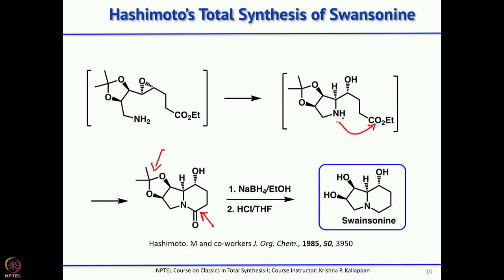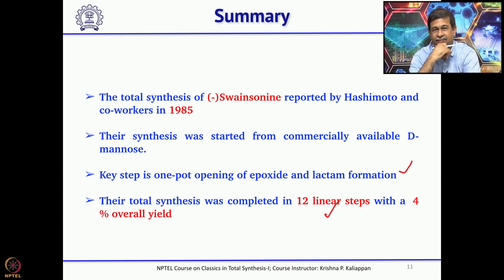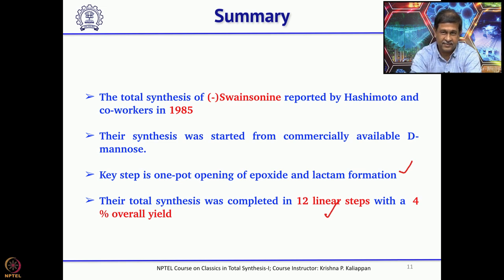This was reported 37 years ago by Hashimoto's group, starting from D-mannose in about 12 linear steps with an overall yield of about 4%. The key step was the one-pot opening of the epoxide with a primary amine followed by lactam formation — in one pot, both rings present in swainsonine are formed.